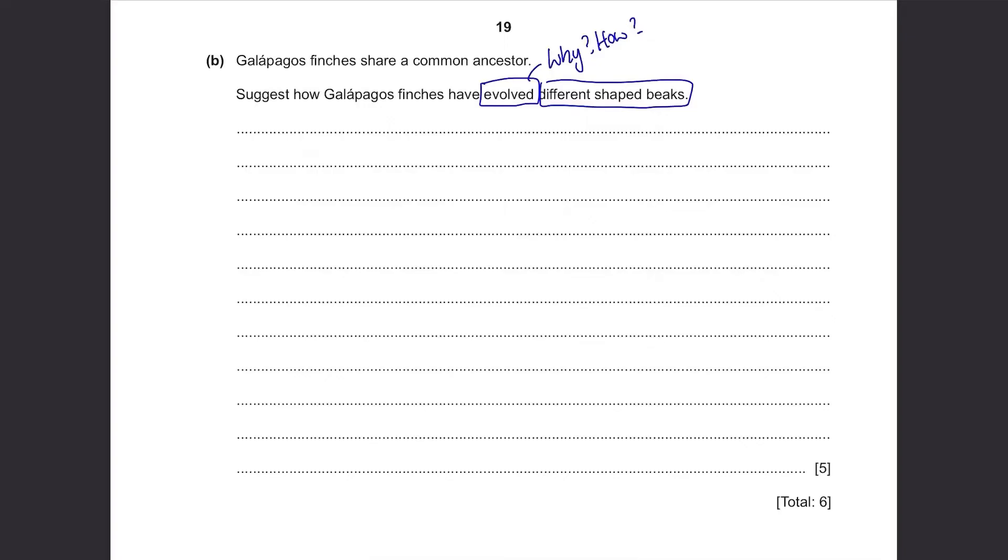Well, the answer is that natural selection has occurred and the birds have evolved different shaped beaks. Now, just explain what natural selection is and the answer for this question is pretty much fixed so you need to memorise this whole thing.